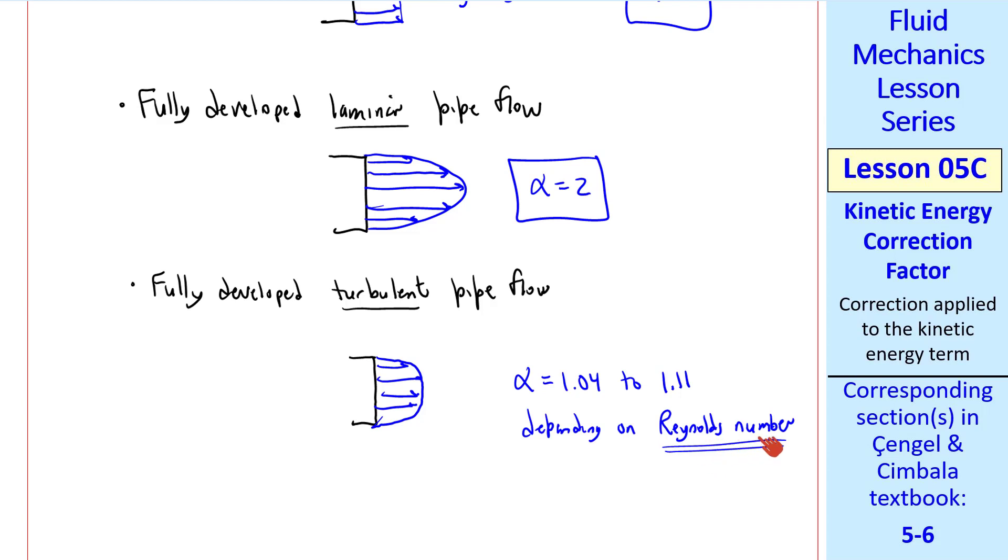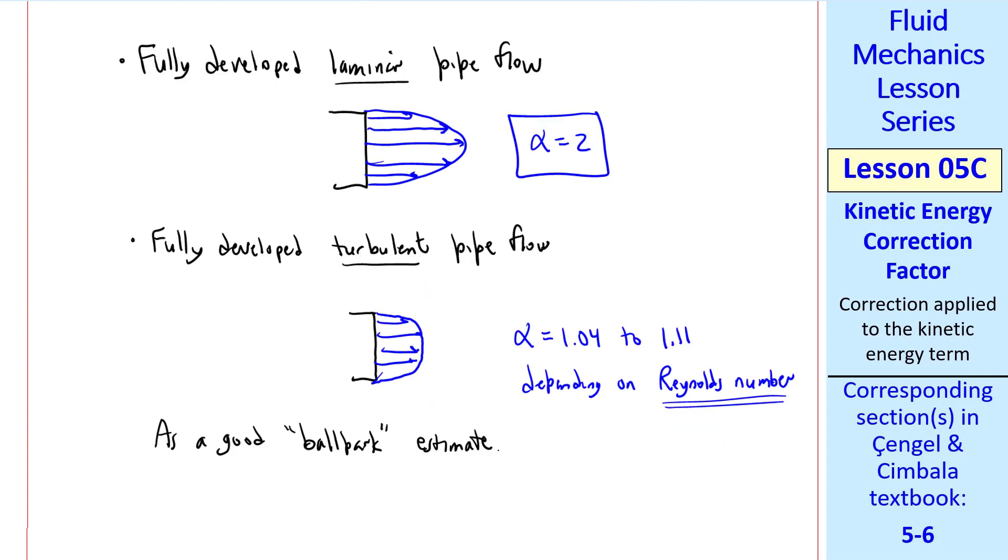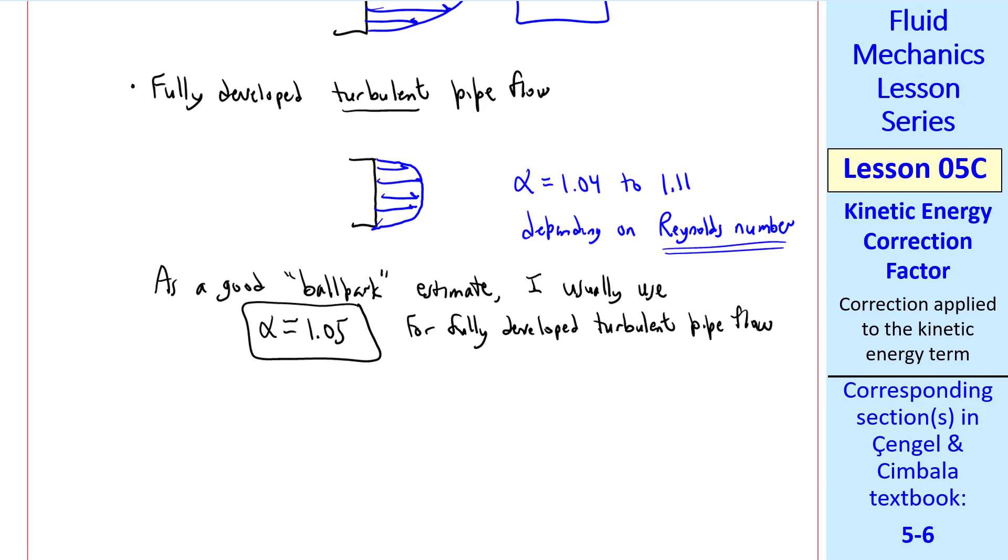Just a preview of coming attractions here. Reynolds number is the most important non-dimensional parameter in all of fluid mechanics. In fact, it determines whether this flow is laminar or turbulent. As a good ballpark estimate, I usually use α equals 1.05 for fully developed turbulent pipe flow.